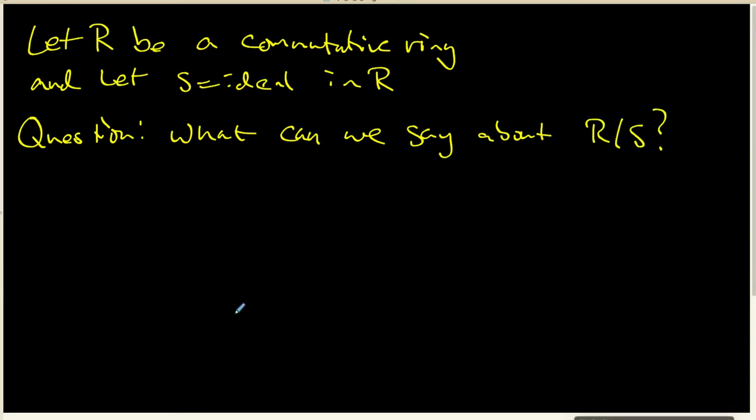Now, we already know that R mod S is indeed a ring. So what I'm wondering is, is there any additional kinds of properties that R mod S might have based on the fact that R itself is a commutative ring?